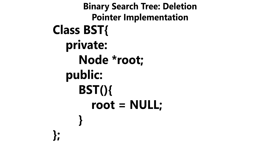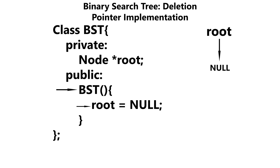Moving on to our main class, we have a private data member called root, and this is going to be the pointer that points to the root of our binary search tree. And here we have our no argument constructor, which is going to initialize the root to null to symbolize that our tree is empty.